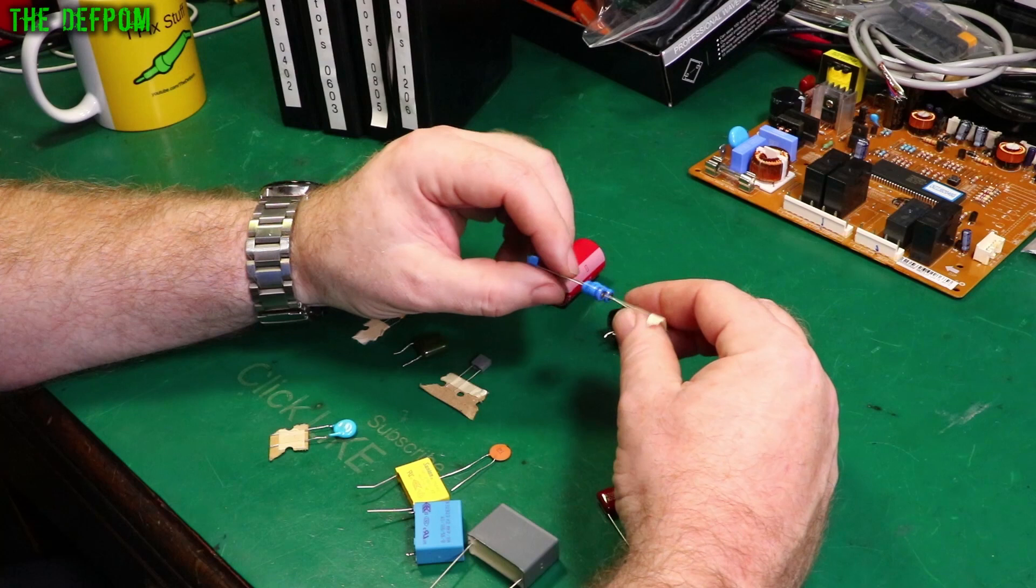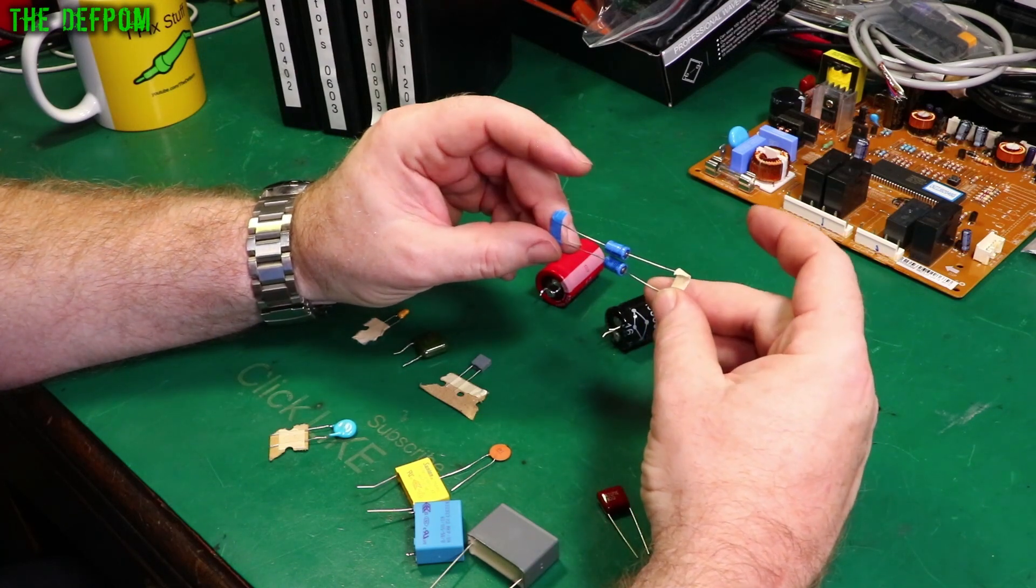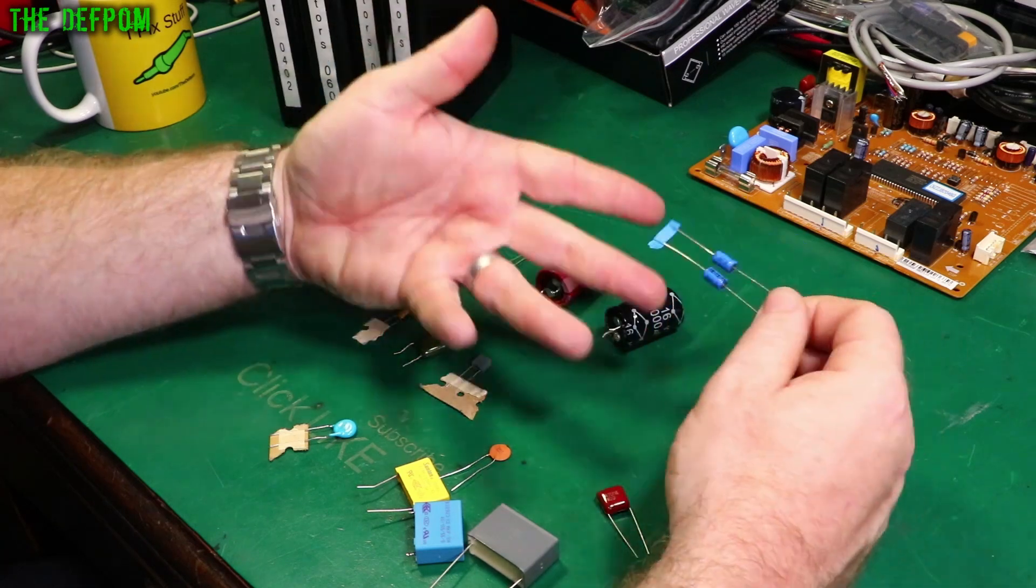These ones are axial electrolytic caps. These are 63 volt 22 microfarad, these particular ones. They will work the same way.